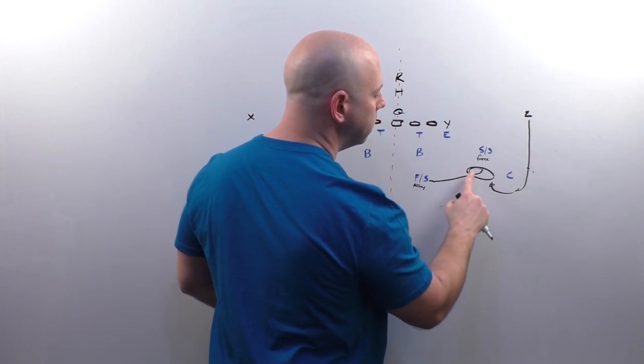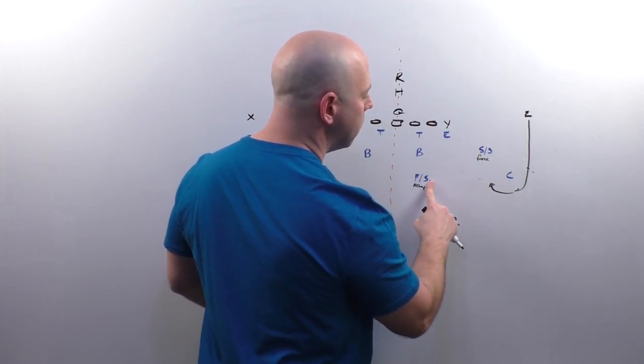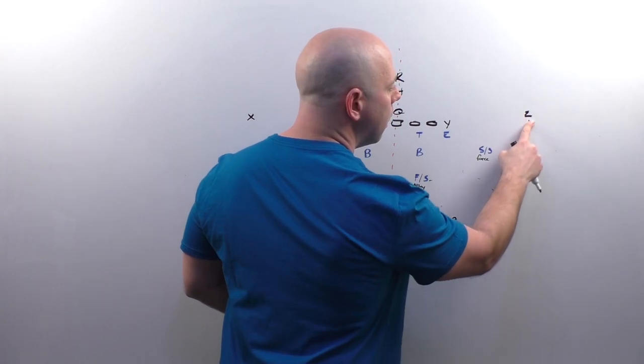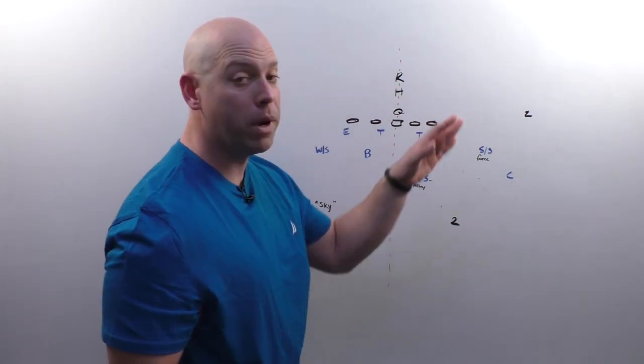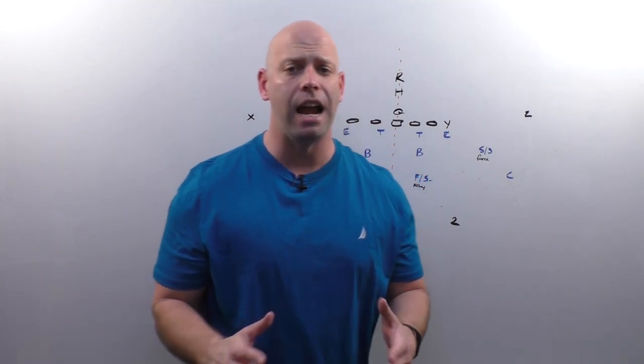And then finally, a wheel handle, the wheel route. I do not want my strong safety. My strong safety is a glorified linebacker, in all truth.